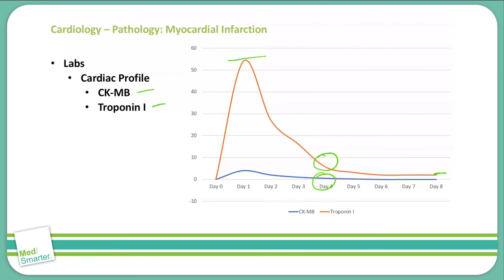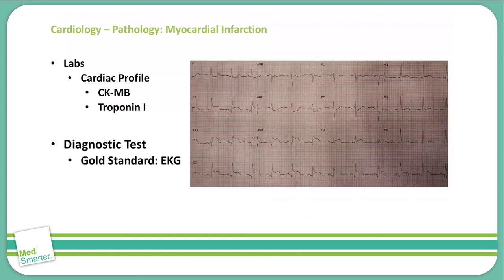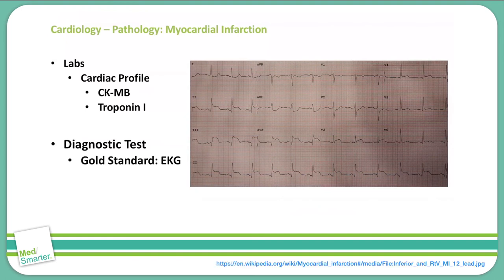Along with checking blood labs, we perform a diagnostic test called an EKG or ECG. The ECG is the gold standard test for a myocardial infarction. There are many different changes that you can see in an EKG that are indicative of a myocardial infarction. On this particular EKG reading, we see in leads 2, 3, and AVF an ST segment elevation, which indicates an inferior wall MI.